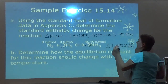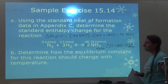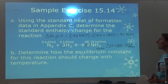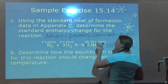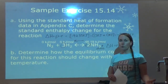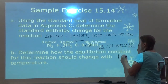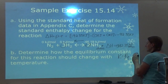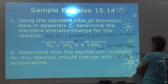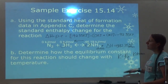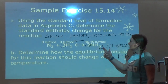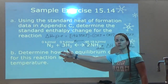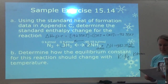Since delta H is negative, heat is considered a product this time. Part B asks: how does the equilibrium constant for this reaction change with temperature? If I increase heat, it's going to shift to the reactants to get rid of the heat. Since K is products over reactants, if I make more reactants, K is going to decrease. Since delta H is negative, the reaction is exothermic — increasing temperature favors reactants, so K decreases.